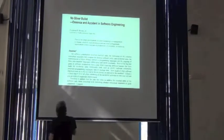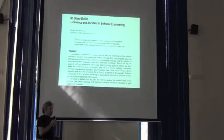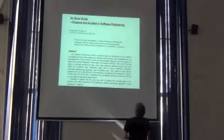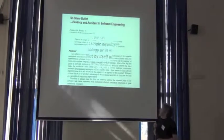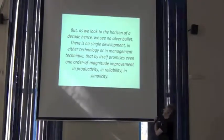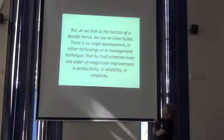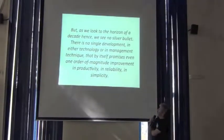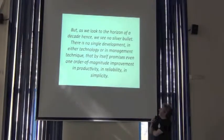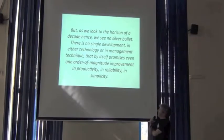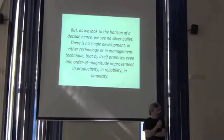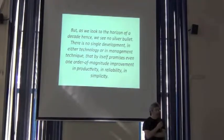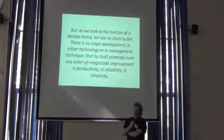This is a very famous paper in the literature about software engineering titled No Silver Bullet: Essence and Accident in Software Engineering by Frederick Brooks, 1986. Here's a really important statement: There is no single development in either technology or management technique that by itself promises even one order of magnitude improvement in productivity, reliability, and simplicity. That's for software engineering. The point is a very important one.